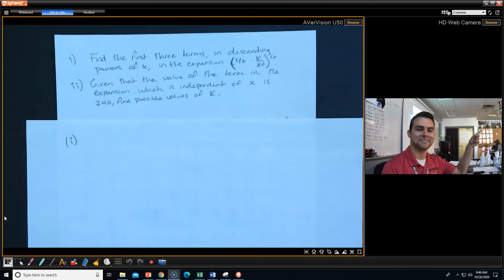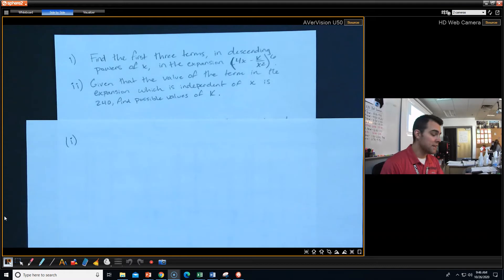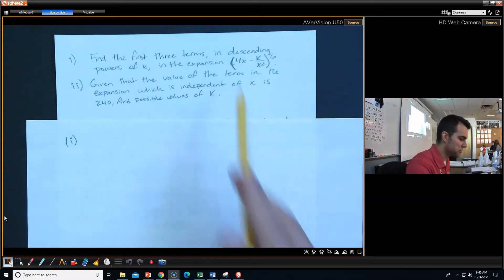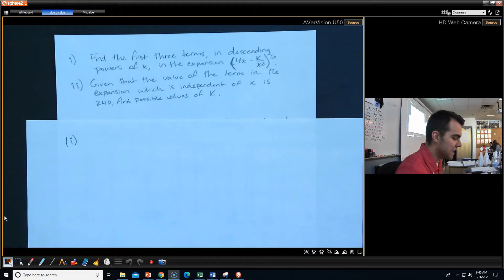Come nerds! Yes, in unison, beautiful, okay? So we're going to go over this problem, and let's start with part one. Finding the first three terms in descending powers of x in the expansion, 4x minus k over x squared to the 6.